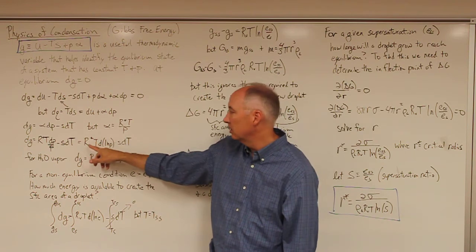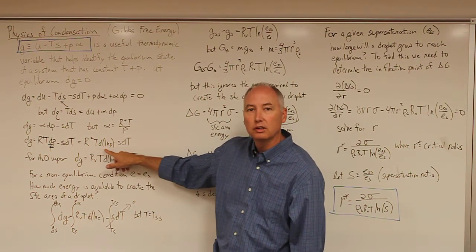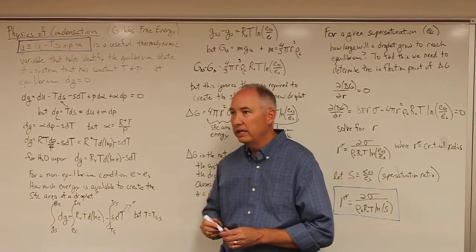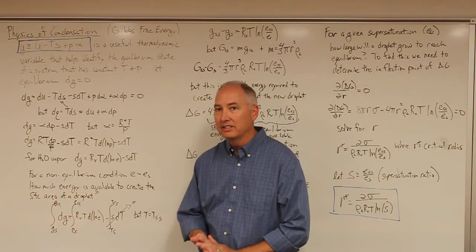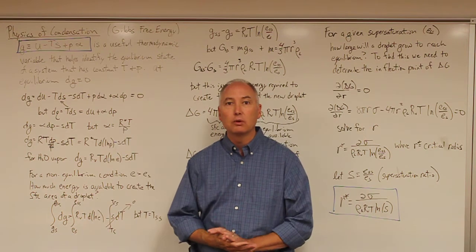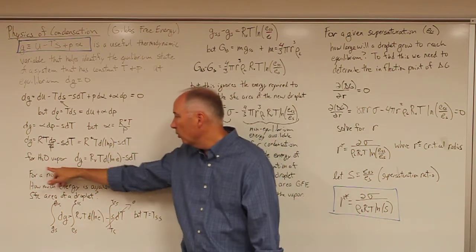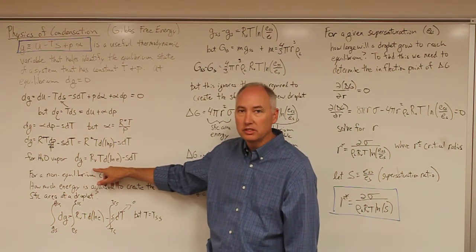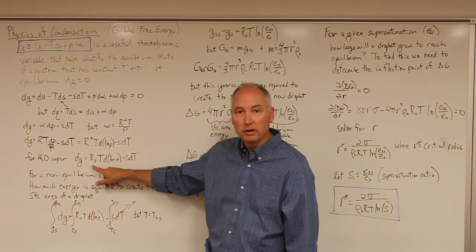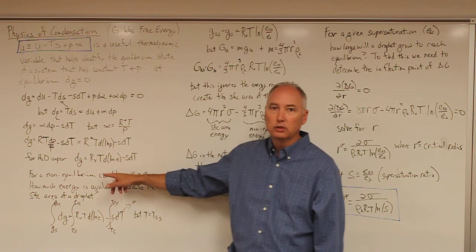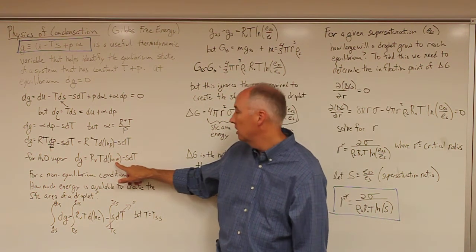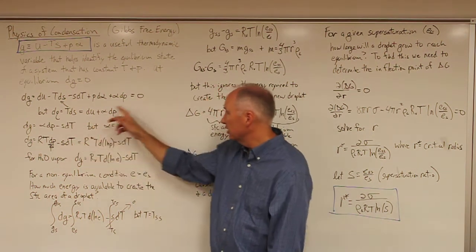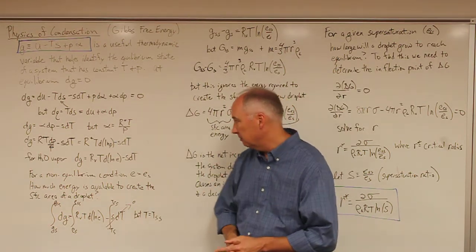That expression is equivalent to R* times temperature times the differential of the log of pressure, minus S·dT. For water vapor, which is what we're dealing with in the condensation process, this generic form of the equation becomes dg equals R_v — the specific gas constant for water vapor — times temperature times the differential of the natural log of the water vapor pressure e, minus S·dT.